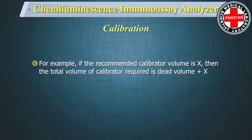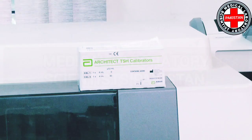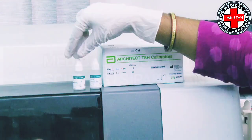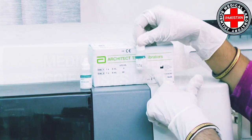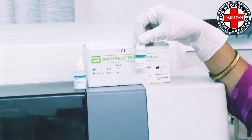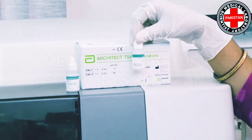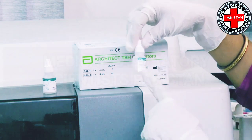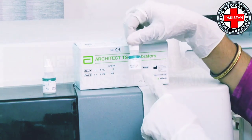For example, if the recommended calibrator volume is X, then the total volume of calibrator required is dead volume plus X. For TSH, two calibrators are used. The calibrators yield concentrations as shown on the kit insert. TSH calibrator stability is 29 days, which means every 29 days the assay has to be recalibrated.